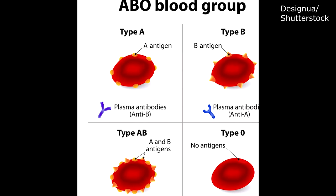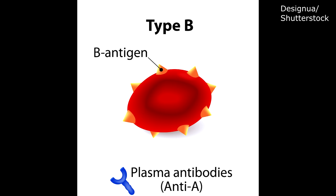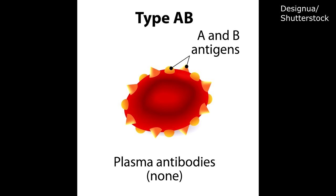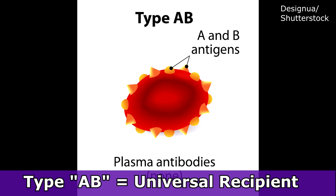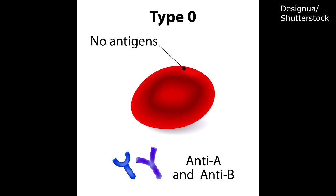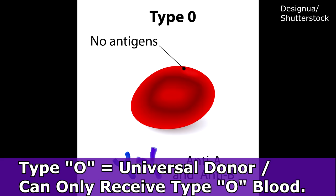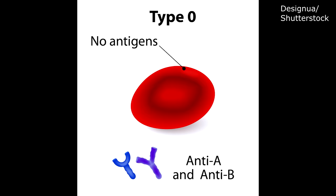Type A has the A antigen and B antibodies in the plasma. Type B has B antigens on the red blood cell surface and A antibodies in the plasma. Type AB has both A and B antigens on the surface but no antibodies in the plasma, making AB the universal recipient because they can receive all other blood types. Type O has no antigens on their surface but has both A and B antibodies in their plasma, so they can donate to everyone but can only receive from other type O's.